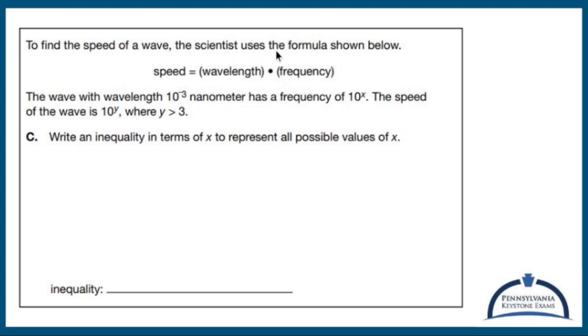To find the speed of a wave, the scientist uses the formula shown below. Speed equals wavelength times frequency. The wave with wavelength 10 to the negative third nanometers has a frequency of 10 to the x. The speed of the wave is 10 to the y where y is greater than 3. Write an inequality in terms of x to represent all possible values of x. So speed is 10 to the y. Wavelength is 10 to the negative third. So 10 to the y equals 10 to the negative third times frequency, which is 10 to the x.